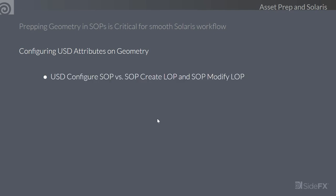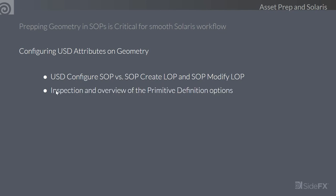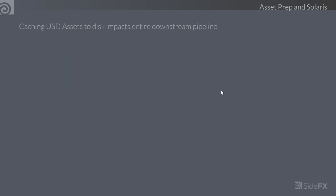Configuring USD attributes on geometry is another important part of the workflow. We can use the USD Configure SOP to configure attributes on USD primitives, or use SOP Create LOP and SOP Modify LOP. The USD Configure SOP is good when entirely inside SOPs needing to author USD data — it gives the same interface as the SOP Fetch LOP. Inspect and review all the primitive definition options available.